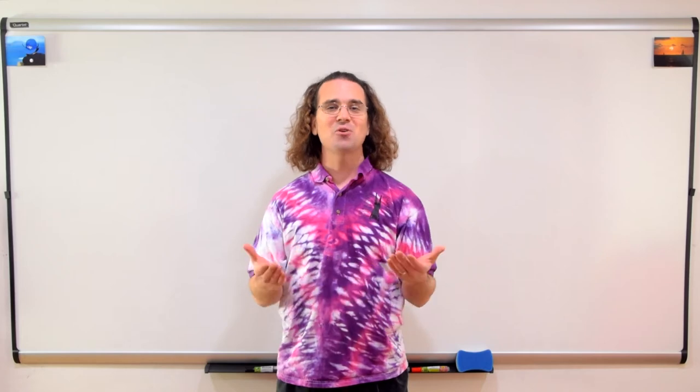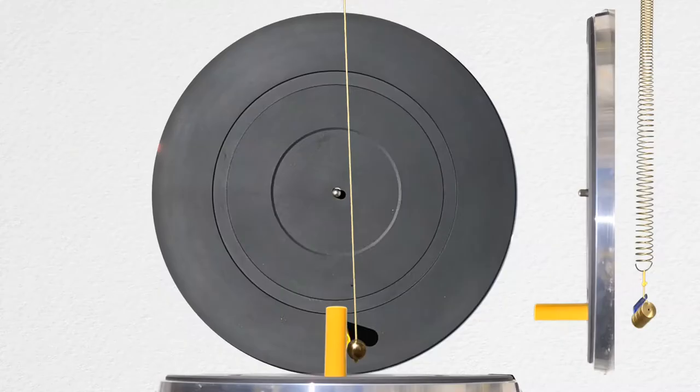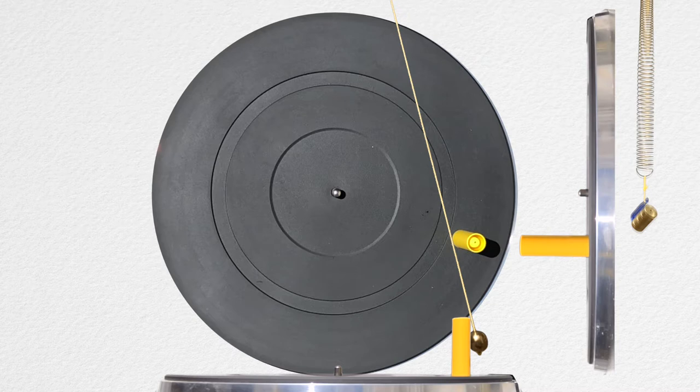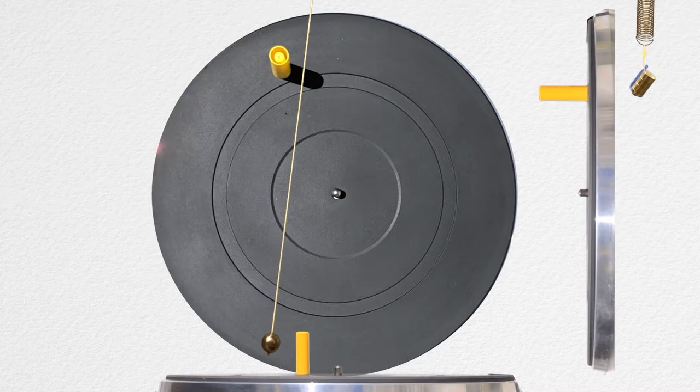Good morning. Previously we showed that circular motion when viewed from the side is simple harmonic motion. Now we are going to derive a position equation for an object in simple harmonic motion.